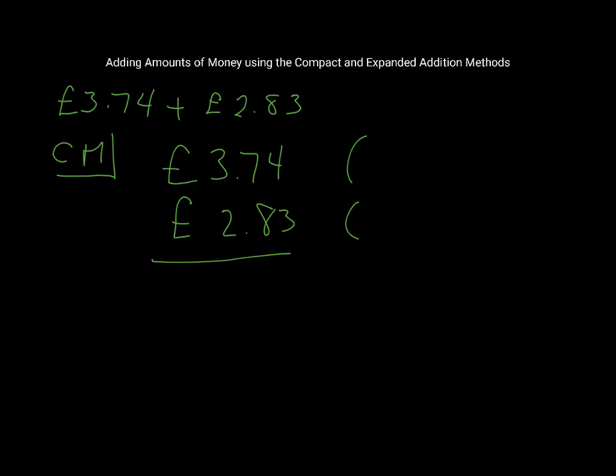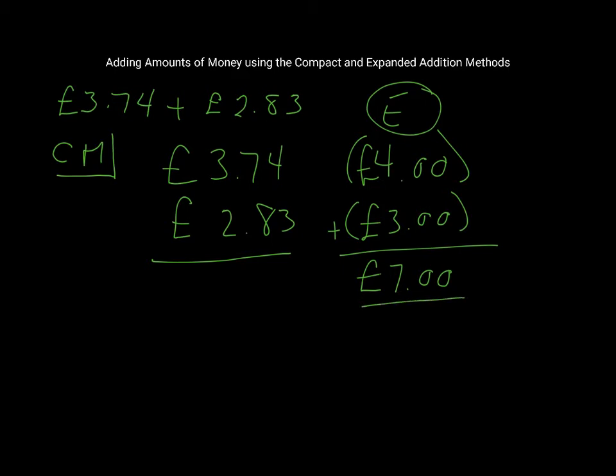So three pound 74 is pretty close to four pounds, and two pound 83 is pretty close to three pounds. Now I'm just going to add them up, that should give me somewhere around seven pounds. Because this is an estimate, seven pounds is not going to be my exact answer but it gives me an idea that my answer should be somewhere around seven pounds.